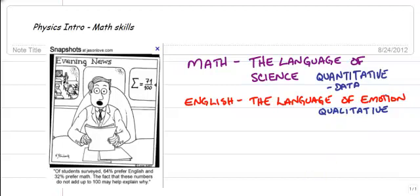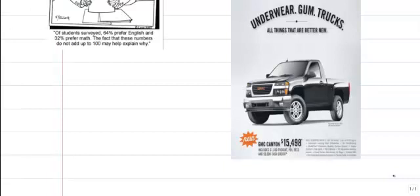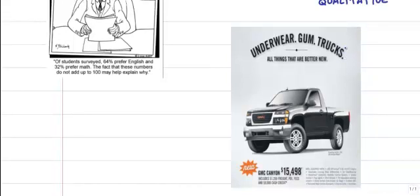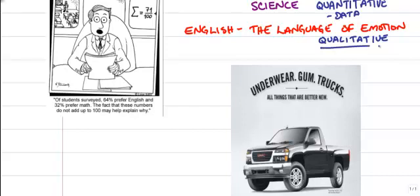Here's an example of a car ad. This one here is for a GMC truck. Kind of a cute little heading on it. Underwear, gum, trucks, things that are better new, clearly. So a typical car ad is going to have some qualitative language. It's going to say this truck, beautiful black. You can see yourself in the doors and so on. Sleek lines. Those are all qualitative.